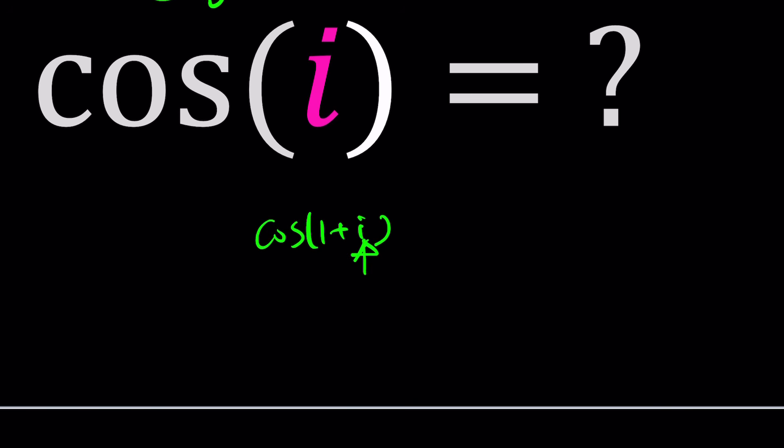If you knew cosine of 1 plus i, this might have helped. Then you could do something like 1 plus i minus i, and you could use the difference formula. But again, that's a lot of work. Who would memorize cosine of 1 plus i when you don't even know cosine of i?